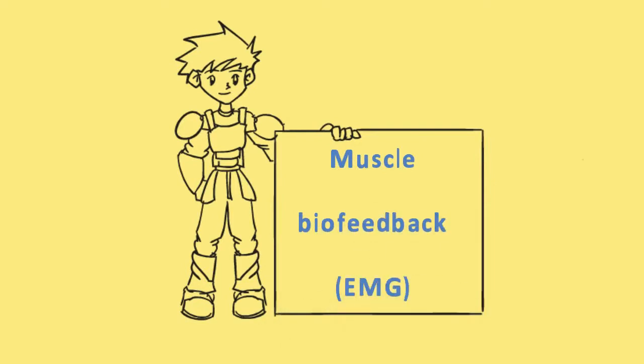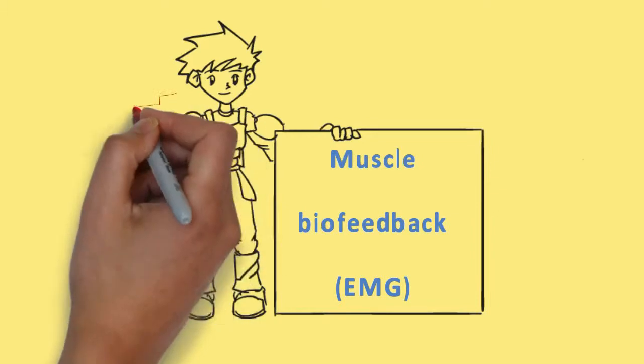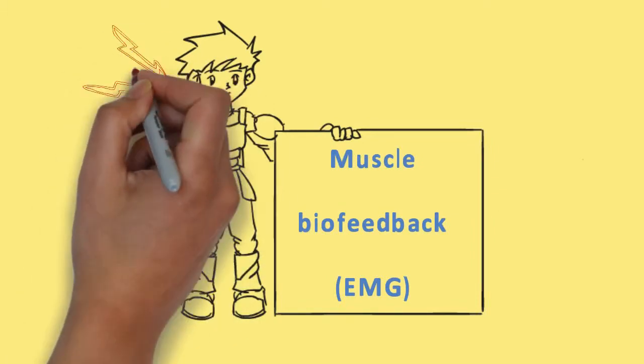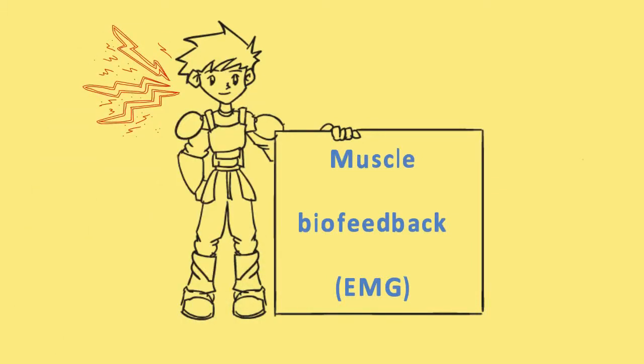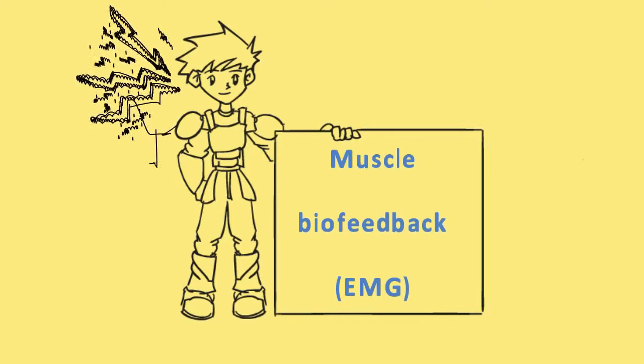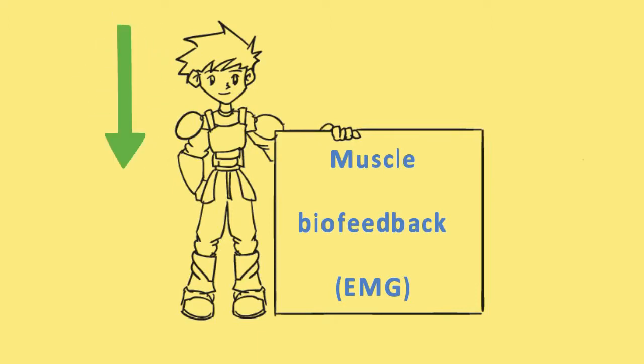You're measuring the electrical activity of muscle firing around the neck and the head. This is often used for tension headaches and for migraines. People can learn when they see the muscle activity and excessive muscle activity firing around their neck and head muscles, they're able to reduce that activity. So that's a type of biofeedback.